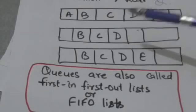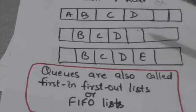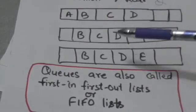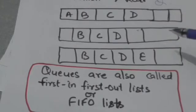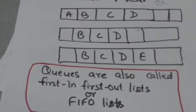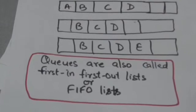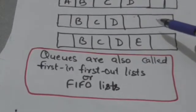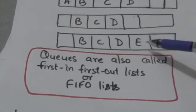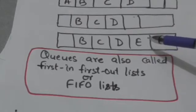Now suppose we have to insert an element E in this queue. Then element E will be added at the rear of the queue. Now E is the rear element of this queue.